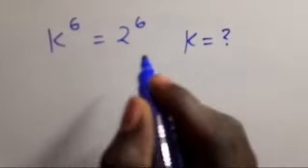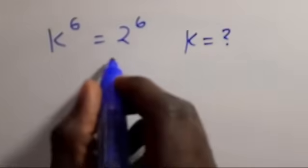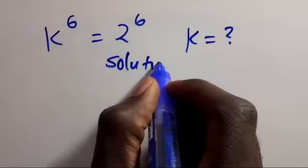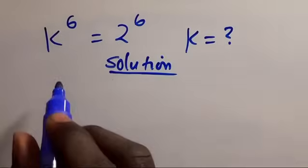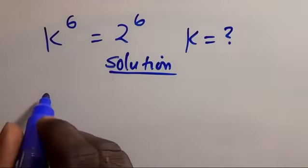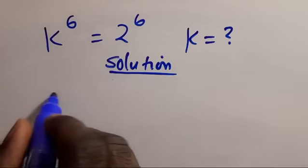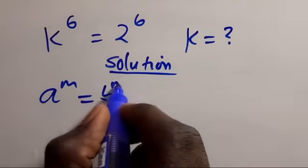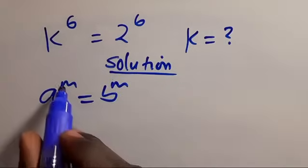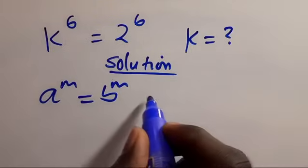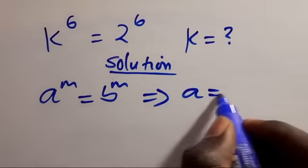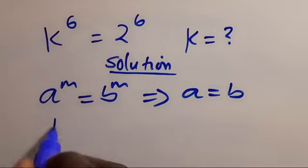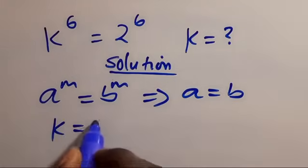We have k to the power of 6 equals 2 to the power of 6. From here, if a to the power of m equals b to the power of m, and they have the same power, this implies that a equals b. Obviously from here we can say k equals 2.